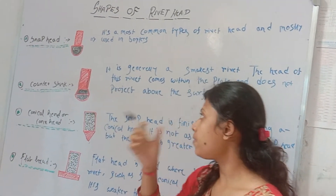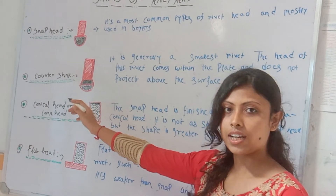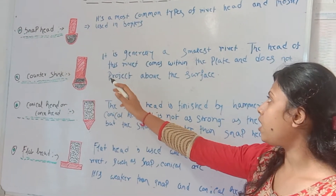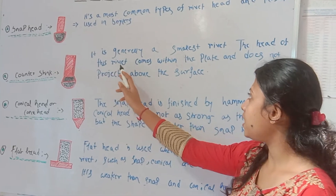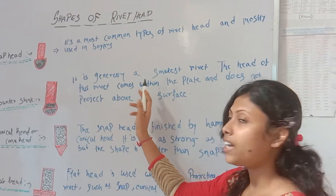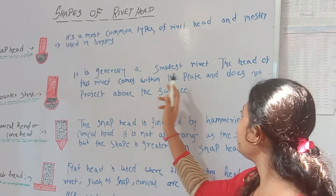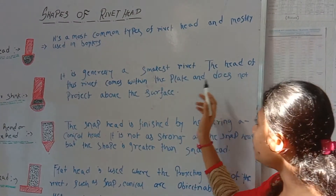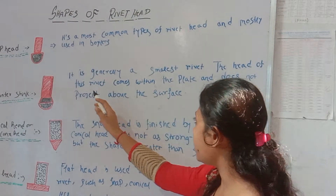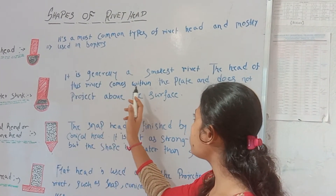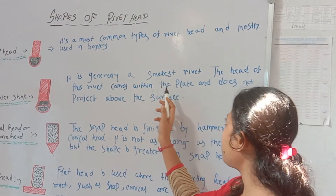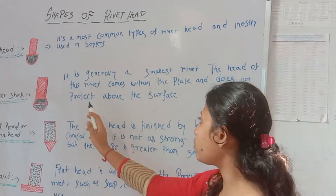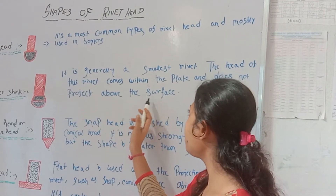Number two is countersink head. What is the definition? It's generally the smallest rivet head. This head of the rivet comes within the plate and does not project above the surface.